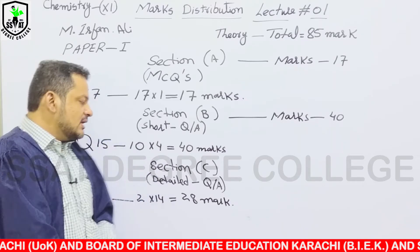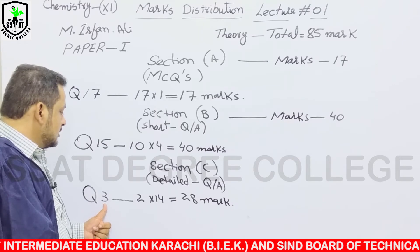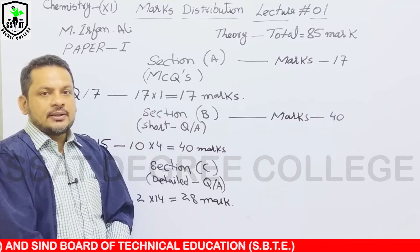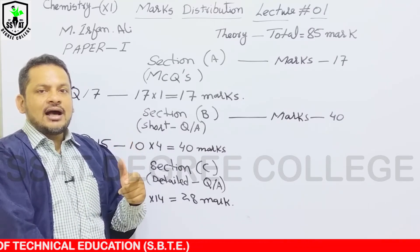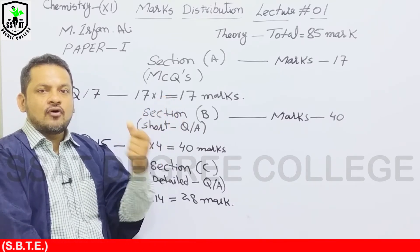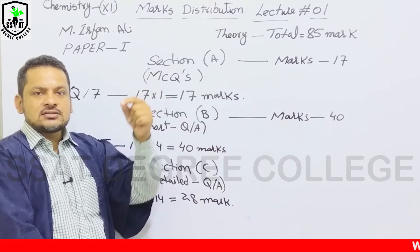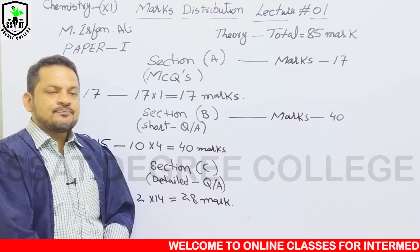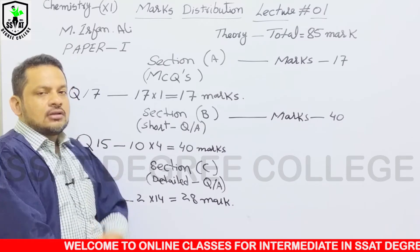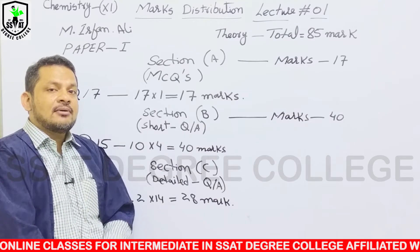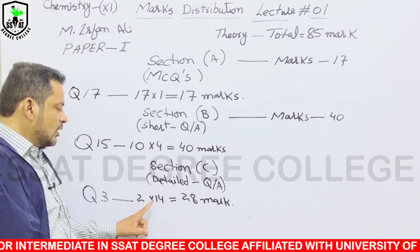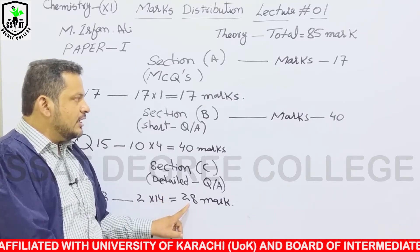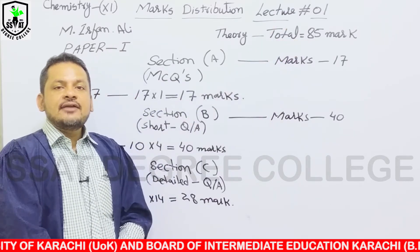Section C میں صرف تین Questions نظر آئیں گے، لیکن ہر Question کے A، B، C تین Sub-sections ہوتے ہیں۔ Marks Distribution ہوتی ہے — A کے 5 Marks، B کے 5 Marks، C کے 4 Marks، یا A کے 6، B کے 4، C کے 4 Marks — جو Question کی Nature پر Depend کرتی ہے۔ ہر Question کے Total 14 Marks ہوتے ہیں اور آپ کو دو Questions Attempt کرنے ہوتے ہیں، جو Multiply ہو کر 28 Marks بنتے ہیں۔